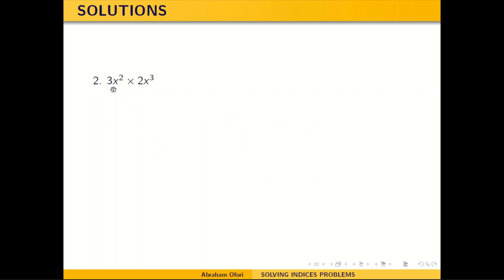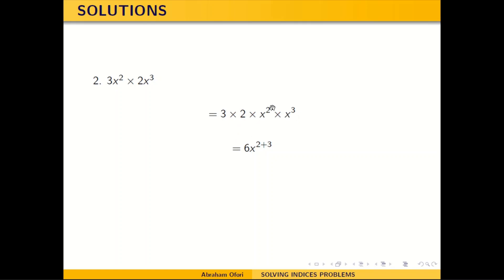Now let's look at the second one. You have 3s squared times 2s cubed to simplify. Multiplication is commutative, so I can choose to multiply 3 and 2 first, then multiply s squared by s cubed. Rearranging will not change anything. So 3 times 2 is 6. s squared times s cubed — the base is s, I add the powers — and this gives me 6s to the power 5. Very simple.